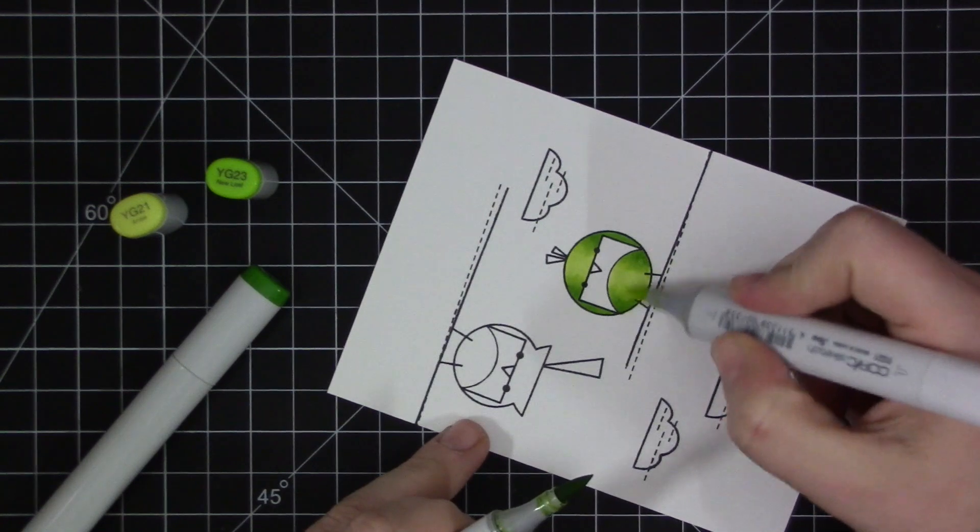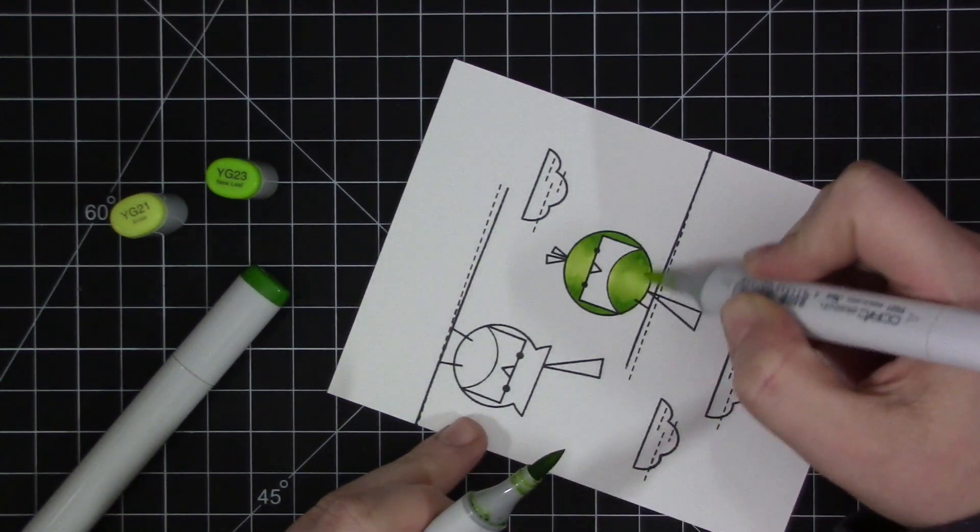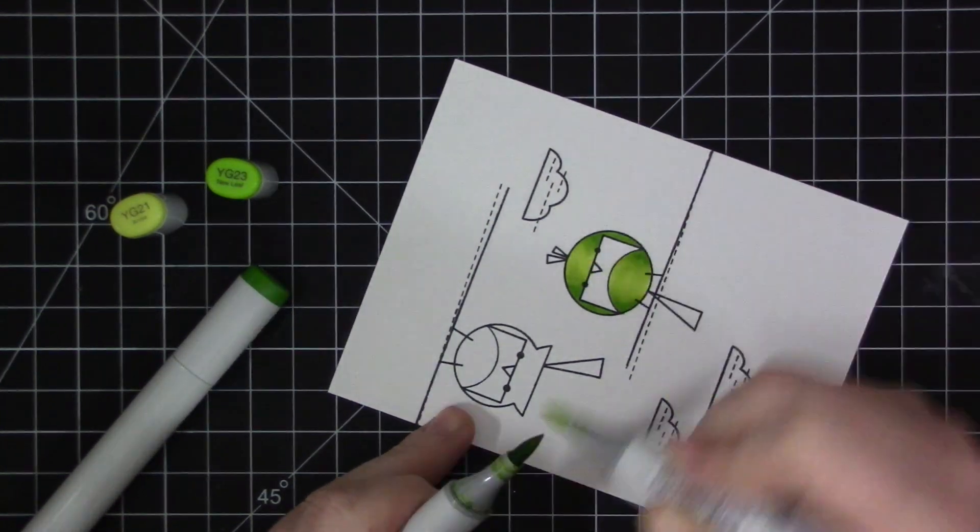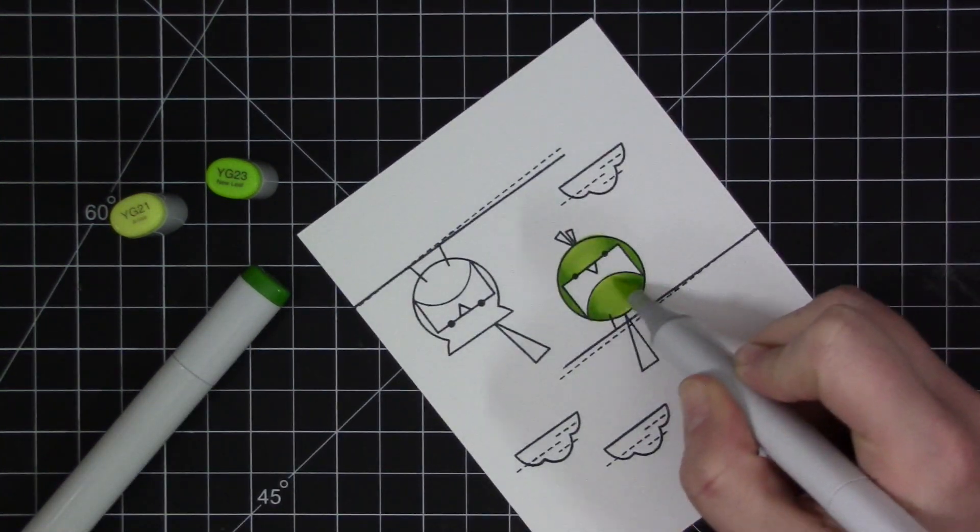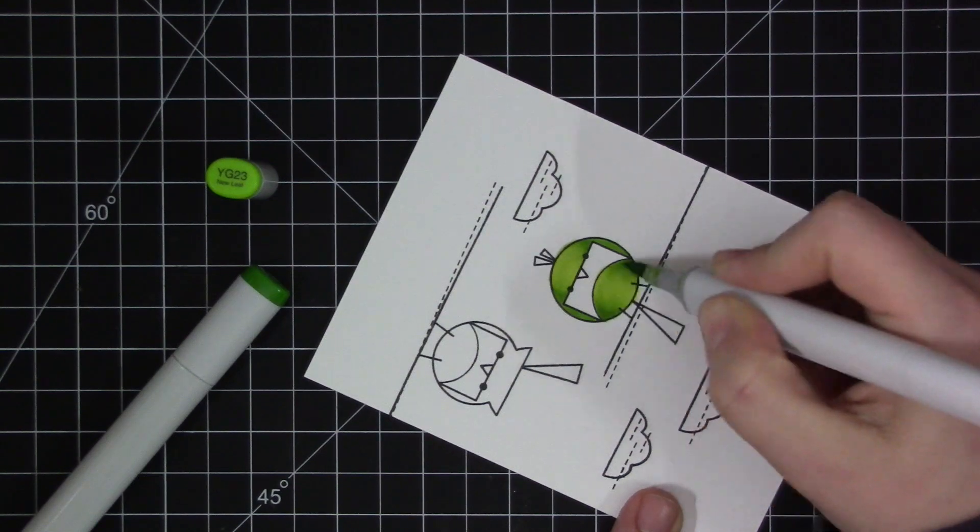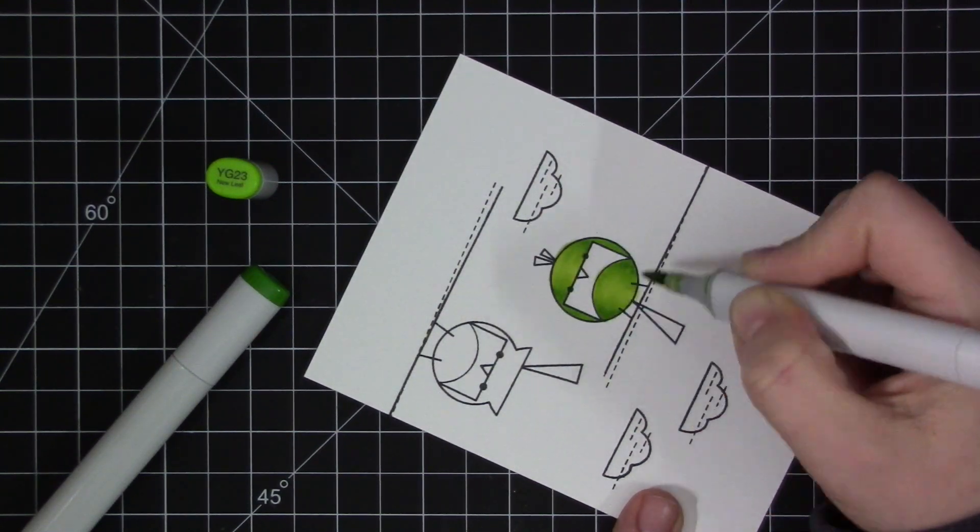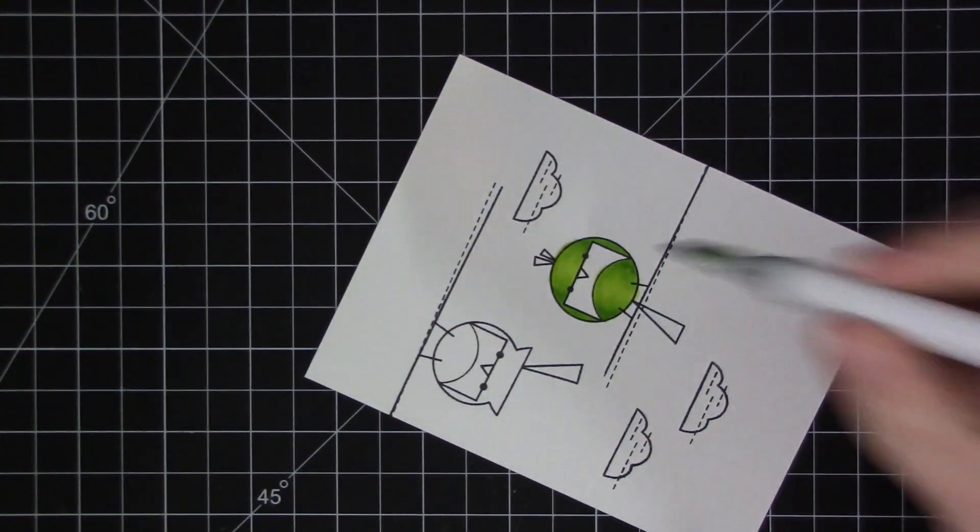I found that the lightest green color and the medium weren't really blending super well together, so if you kind of touch the tip of your lighter color to the darker color and blend it out that way, it just helps to blend those colors together.